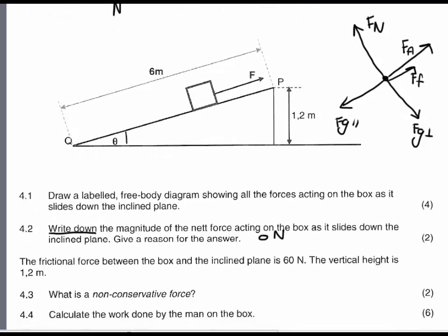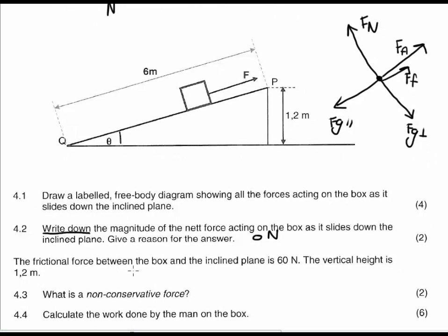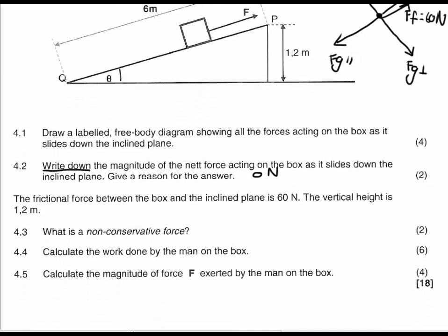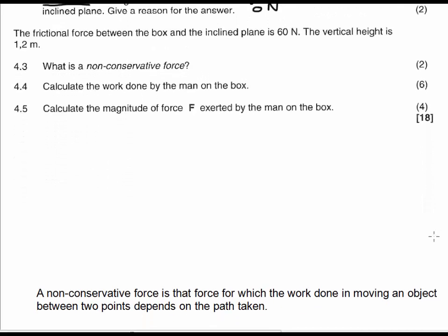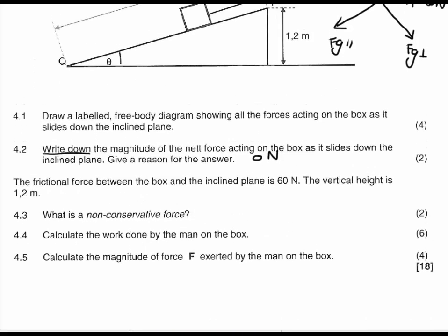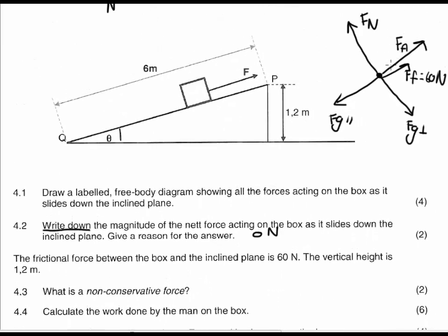The next part says the frictional force between the box and the inclined plane is 60 N, and the vertical height is 1.2 meters. Then it asks for a definition: what is a non-conservative force? A non-conservative force is basically a force for which the work done in moving an object between two points depends on the path taken. In this example, the applied force as well as the force of friction are both non-conservative forces that will definitely depend on the path taken.